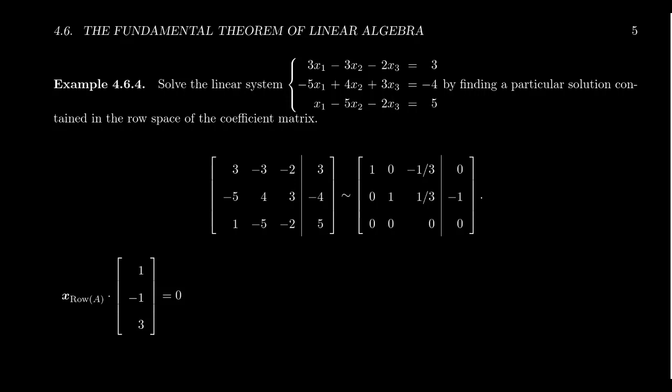So let's take a system of equations: 3, -3, -2 first row; -5, 4, 3 second row; and 1, -5, -2 third row. If this at all looks familiar, this is the same matrix we've been playing with this whole time. But let's take a different vector B over here: 3, -4, 5.